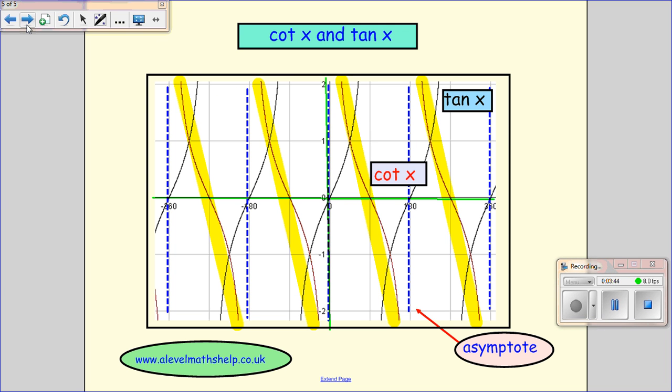So the last one, cot x and tan x. So tan x is a slightly harder graph, I always feel. I remember it goes through 0, and then heads off to infinity, this is the tan graph, at 90.